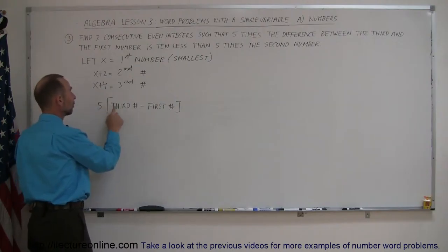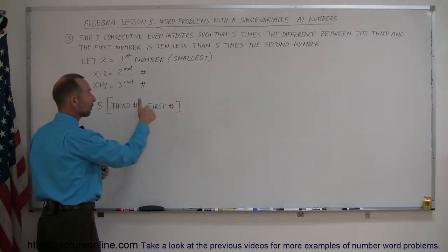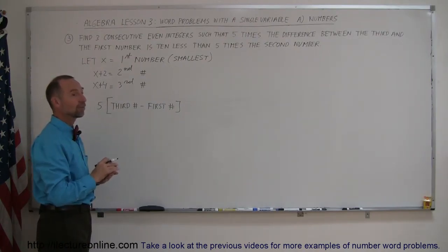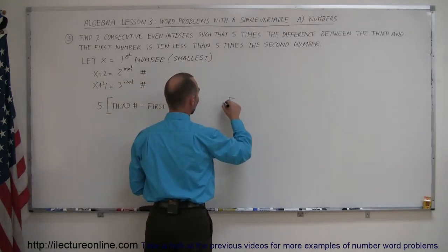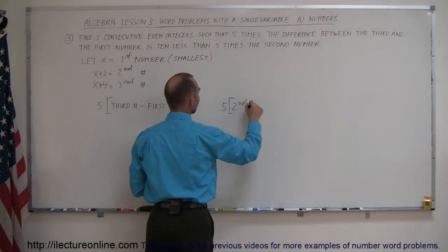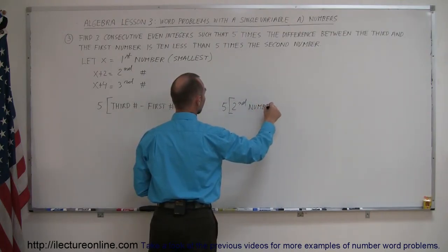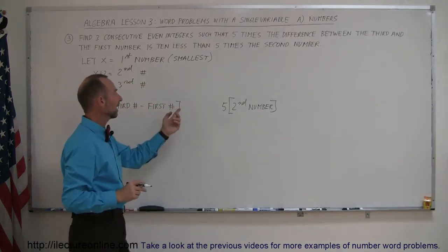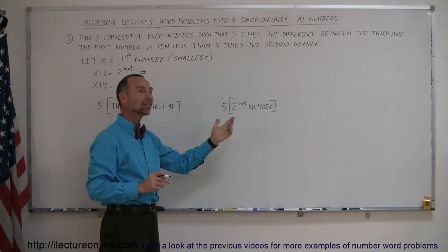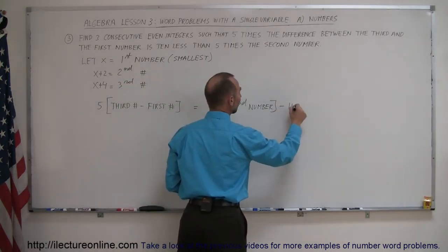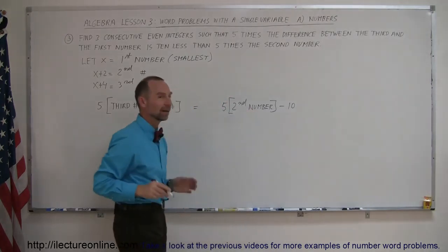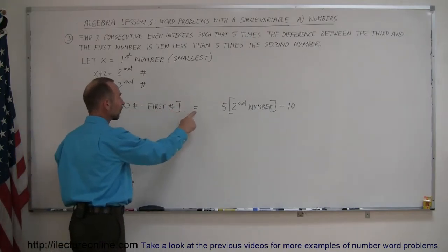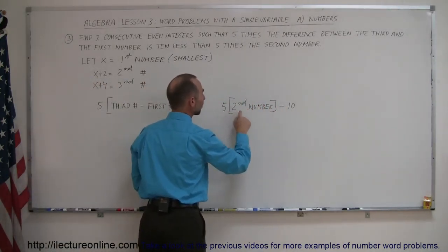It's five times the difference between the third number and the first number, and that should be ten less than five times the second number. Here we have five times the second number, and this is ten less than that, so it's this minus ten. So, five times the difference between the third number and the first number equals ten less than five times the second number.